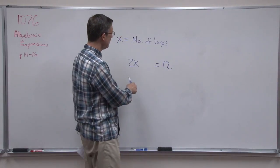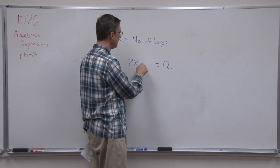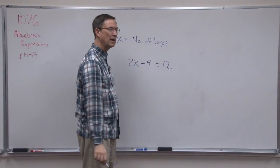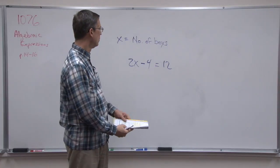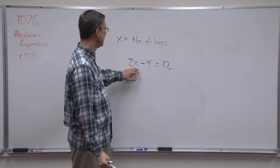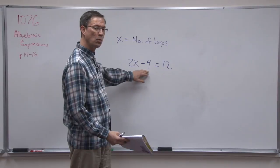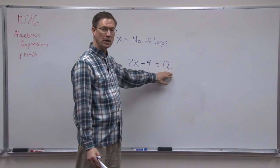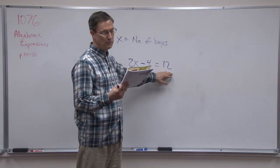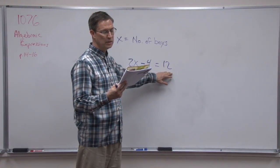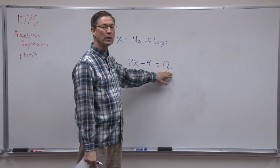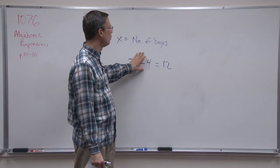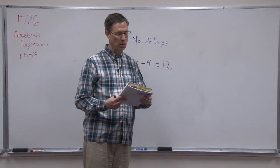This is actually 4 less than twice. So that means I have to take twice the number of boys and subtract 4 in order to have an equation now. So twice the number of boys, take away 4 from that, and I would be able to find the number of girls to be 12. Now I don't think in this case you're not actually solving the equation. They just want you to come up with an equation.